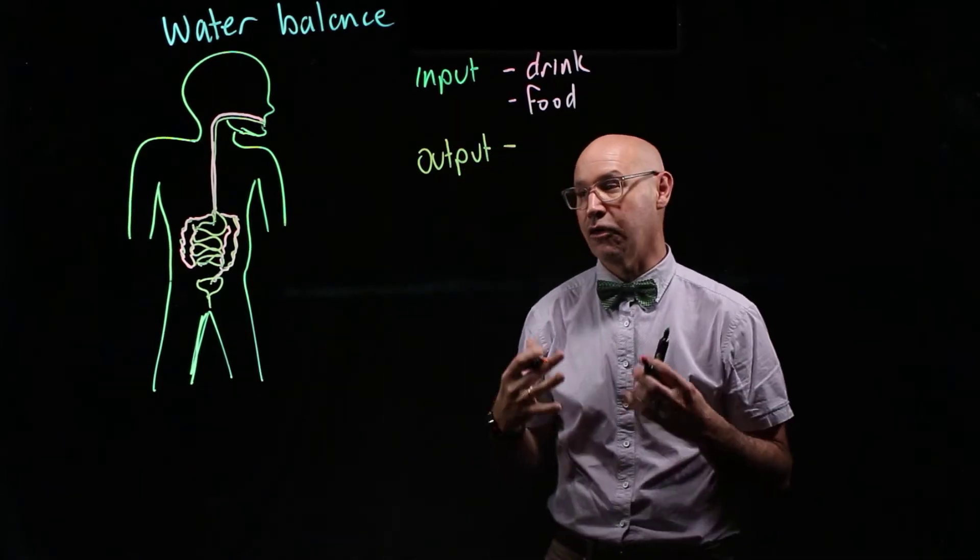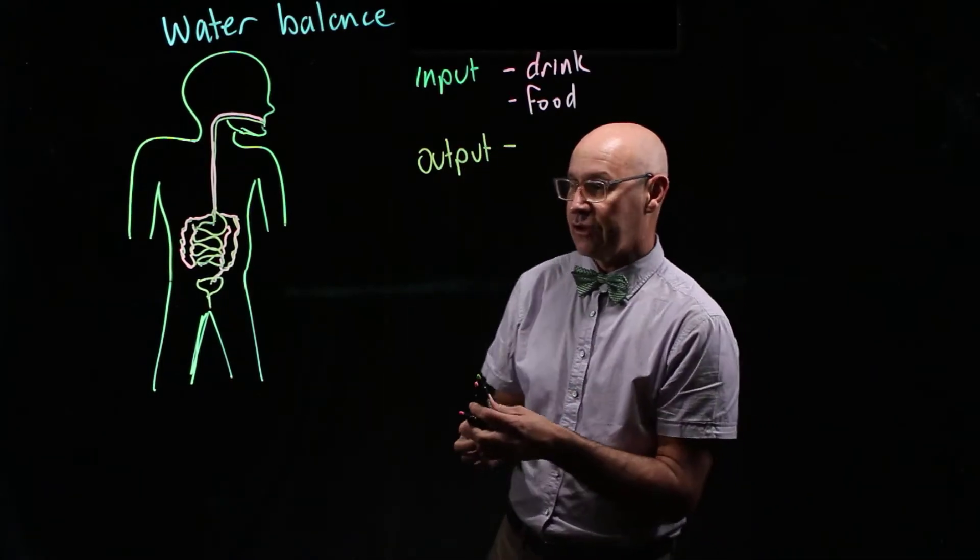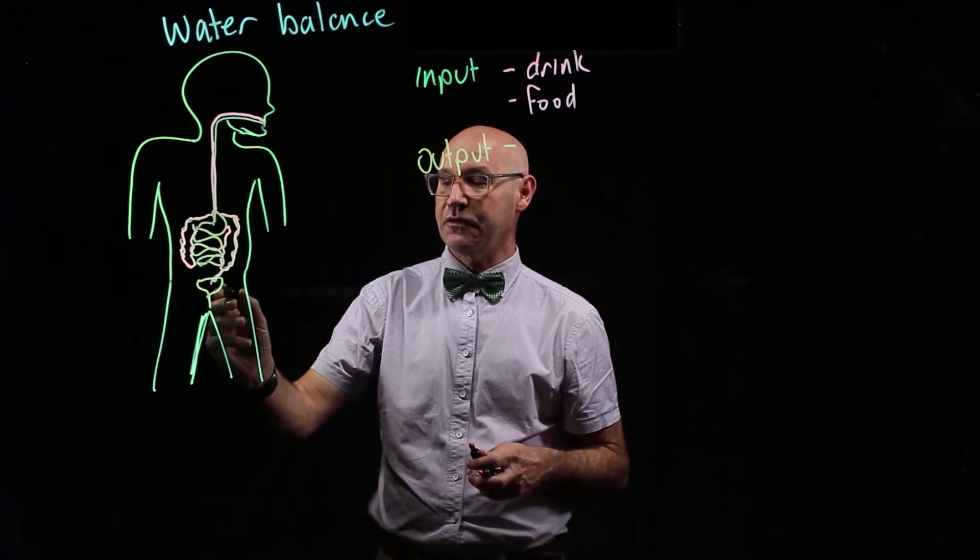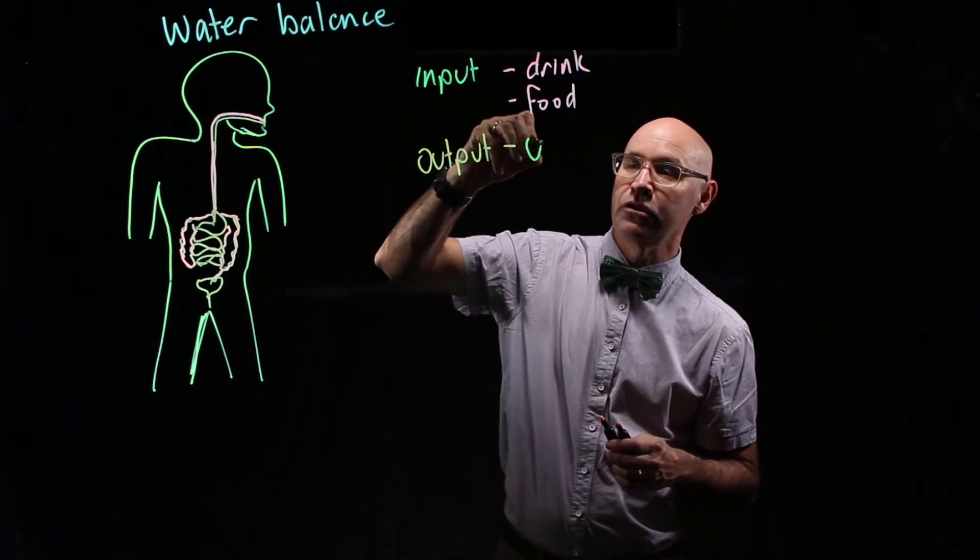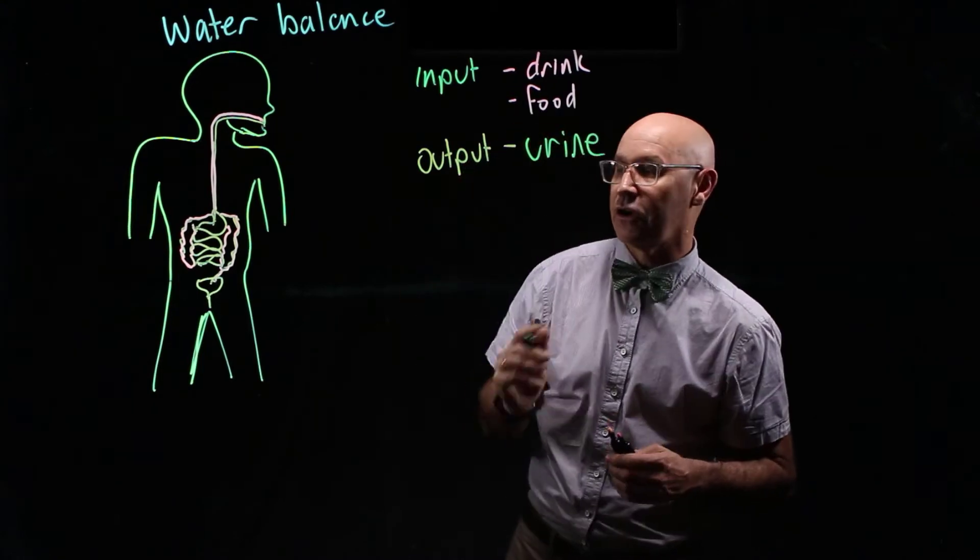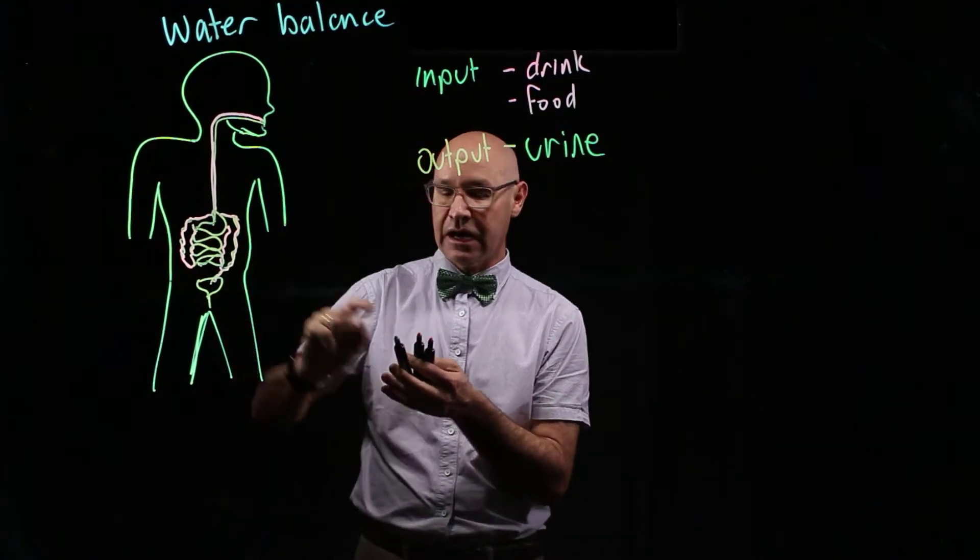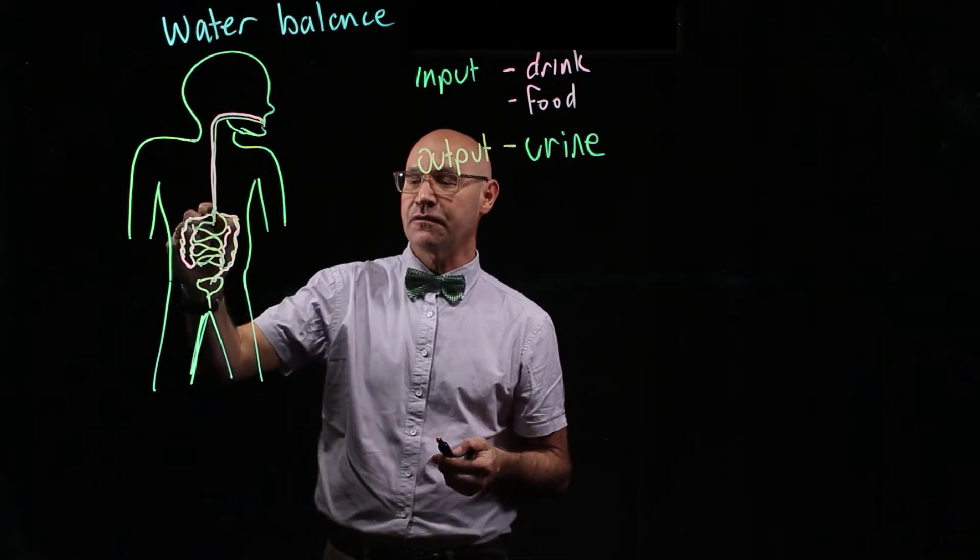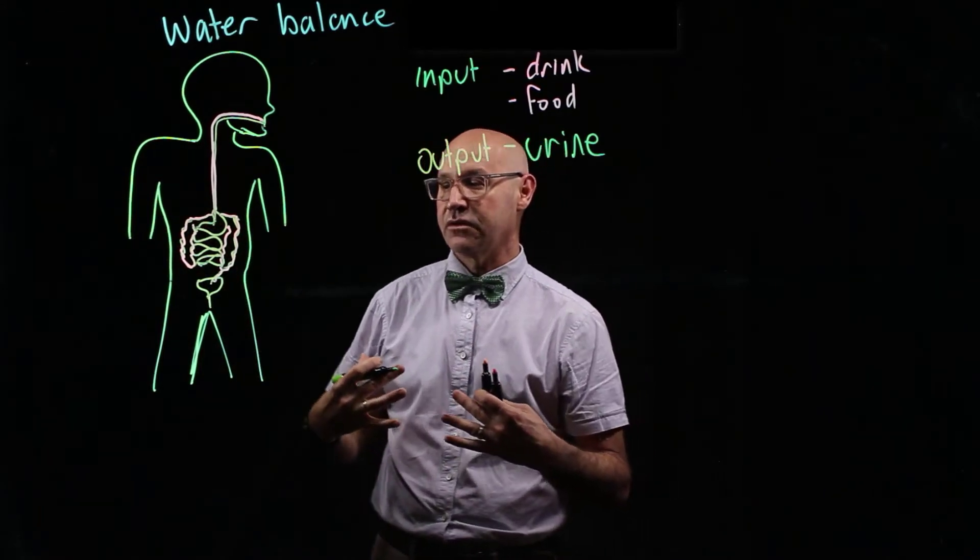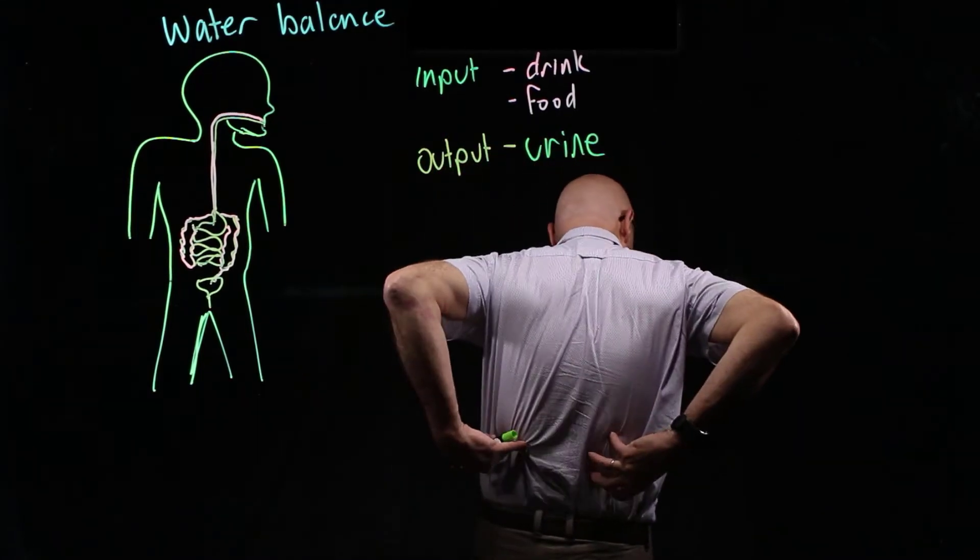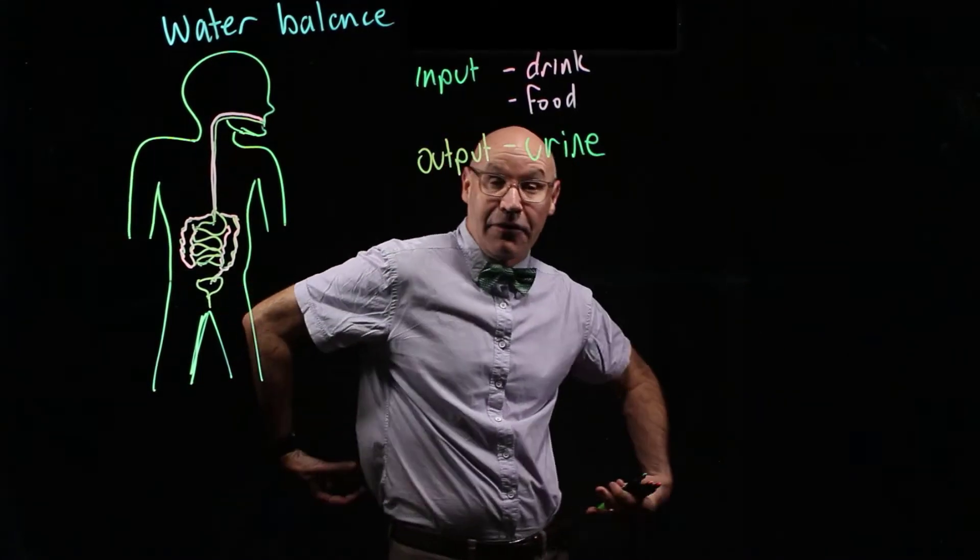We've mentioned the urinary bladder here, so one of the ways is through urine. Water gets filtered through the kidneys. Now it's hard for me to draw the kidneys here because I've drawn the intestines, but the kidneys are around about here, so essentially your lower back, and they are at the back.